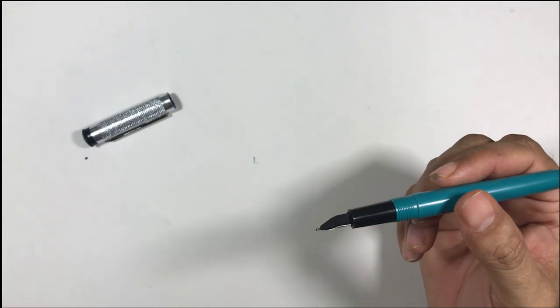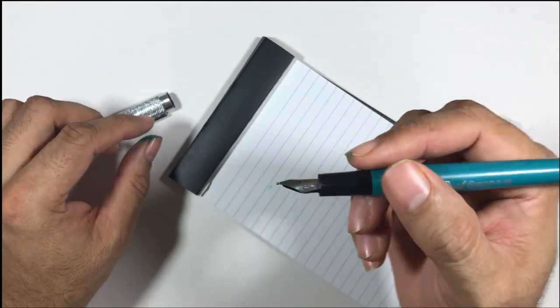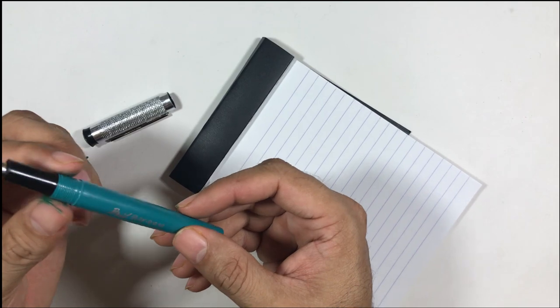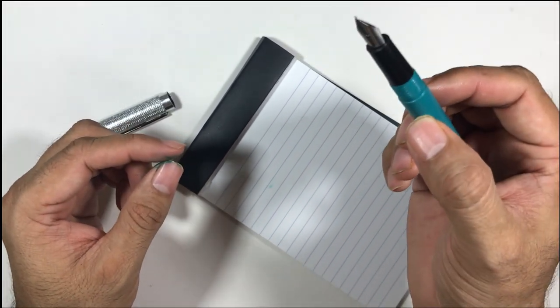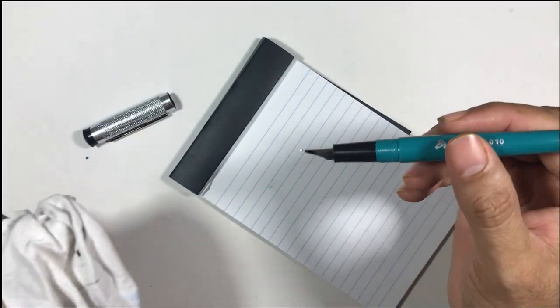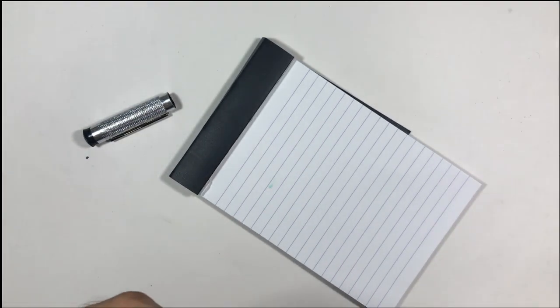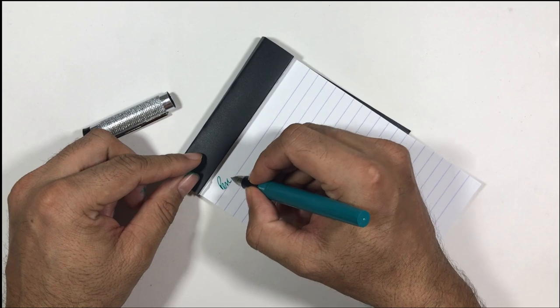So let's do a small writing sample. You can see this pen also burps a lot. The ink in this pen is not filled to the brim so this pen might burp, and you can see it is burping.